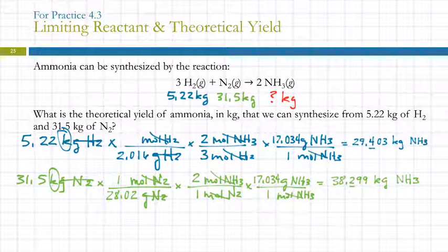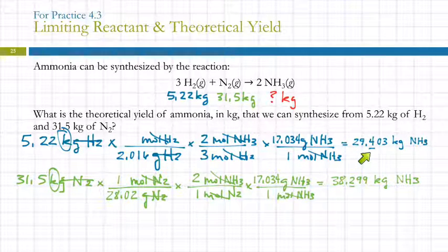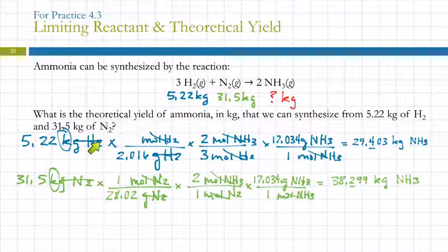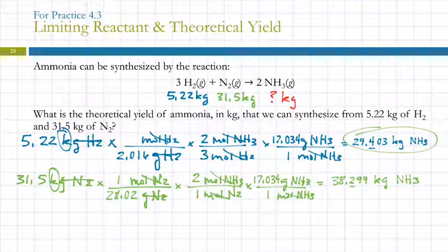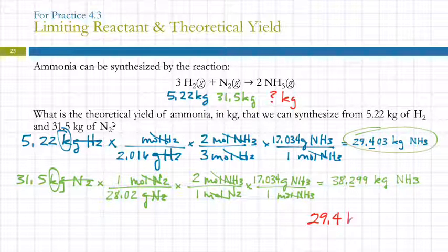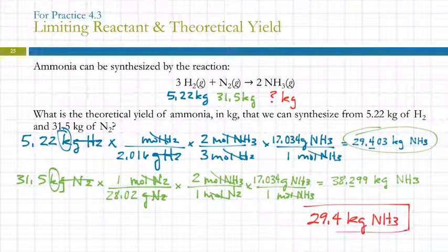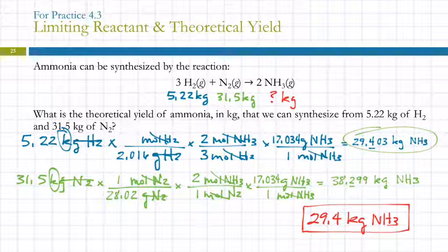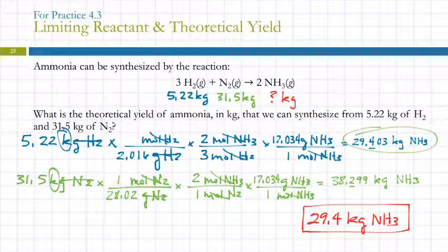Ammonia can be synthesized by this reaction. What's the theoretical yield of ammonia in kilograms that we can synthesize from 5.22 kilograms of hydrogen and 31.5 kilograms of nitrogen? Let's put these numbers here: H2, 5.22 kilograms, and nitrogen, 31.5 kilograms. We're trying to find kilograms of ammonia. How do we know this is a limiting reactant problem? They're giving us masses of both reactants. If they give you masses of two reactants, you need to do two calculations.